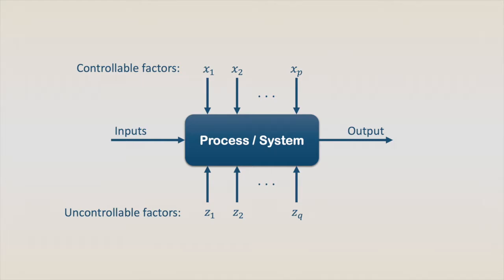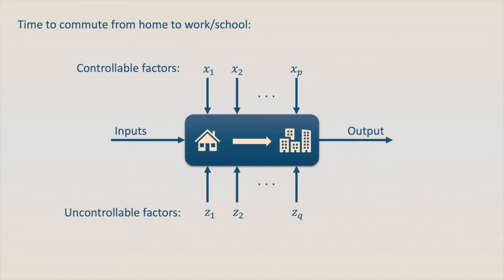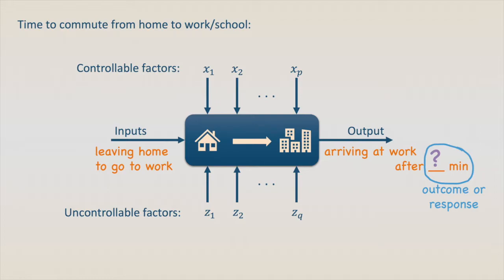To illustrate this, let's take a very simple example of our everyday life, the time to commute from home to work or school. Even if we haven't done any organized experiment, we are always trying to minimize the commuting time. The input of this process is leaving home, and the output is arriving at work or school. The commuting time is the outcome or response variable that we are going to use to evaluate the performance or efficiency of the process.